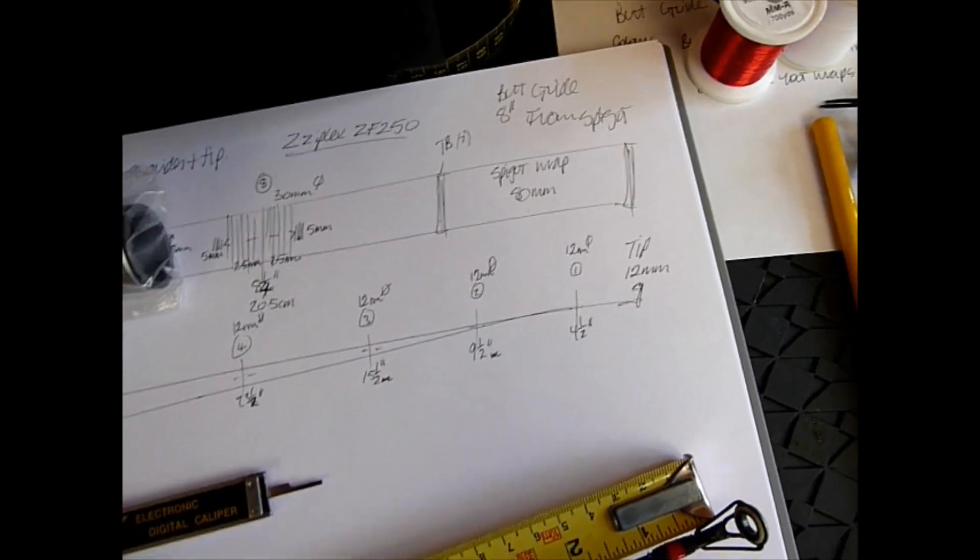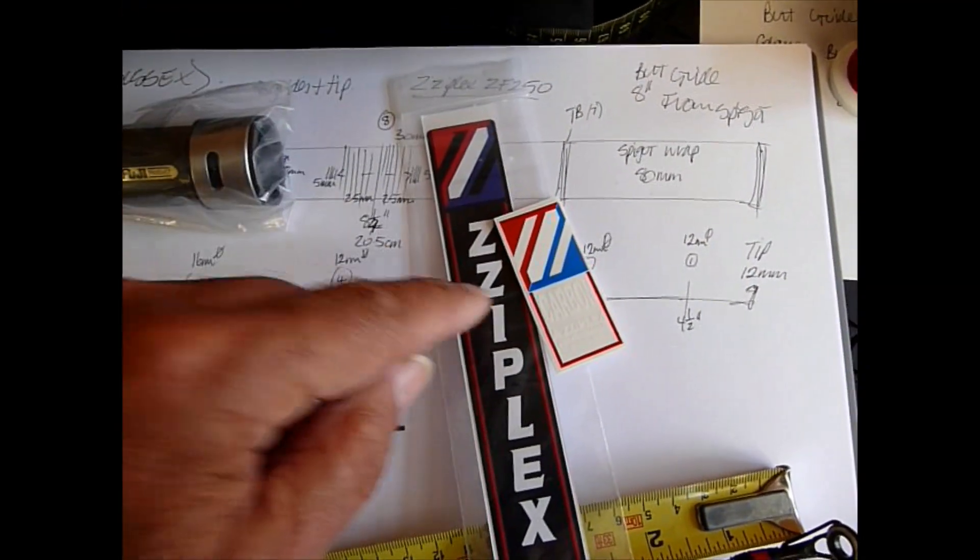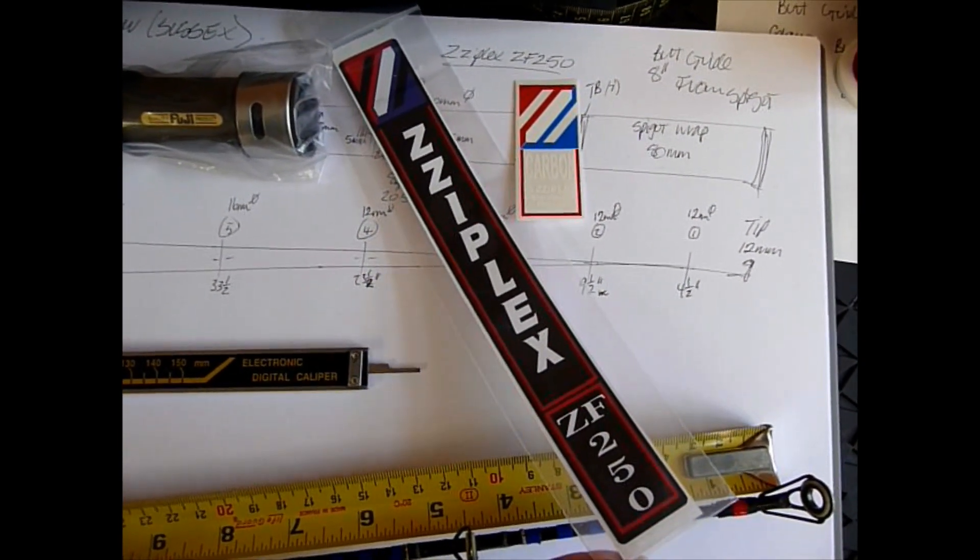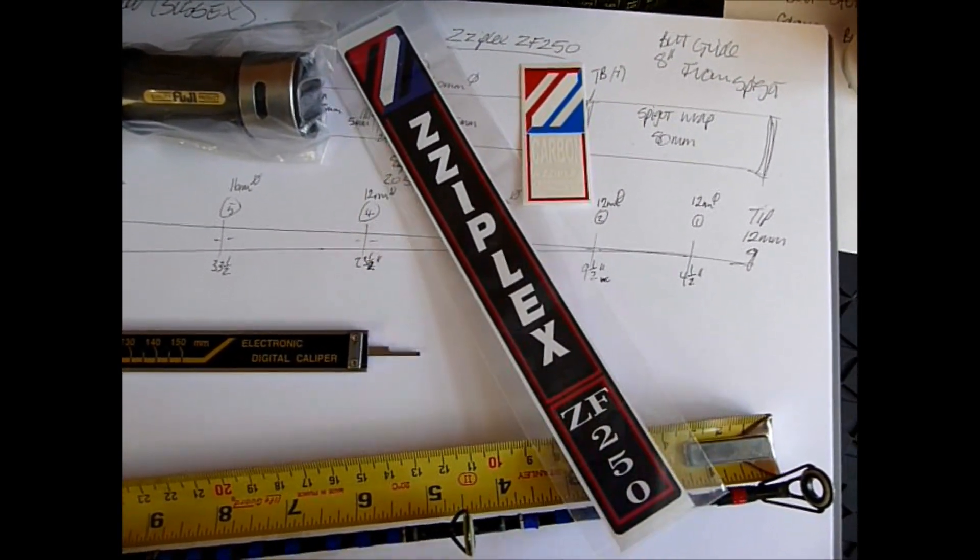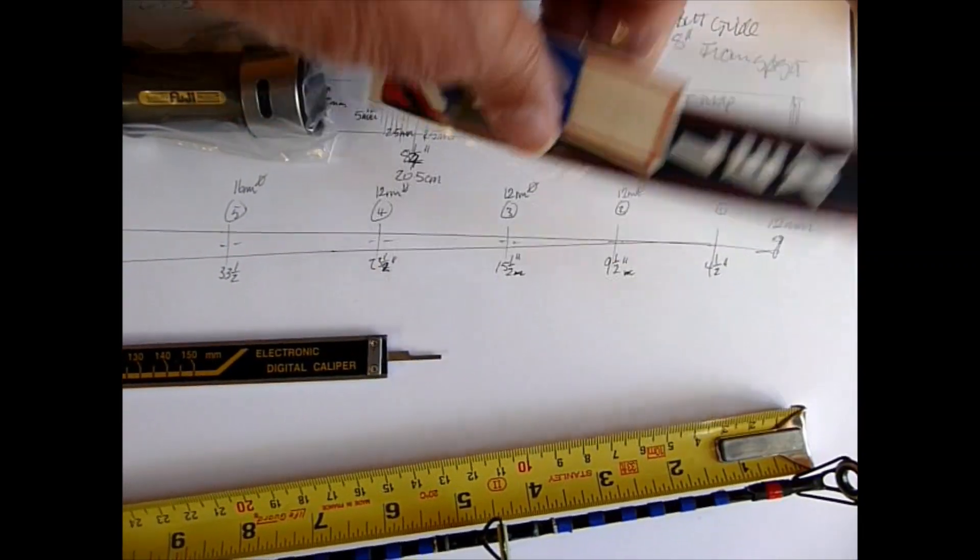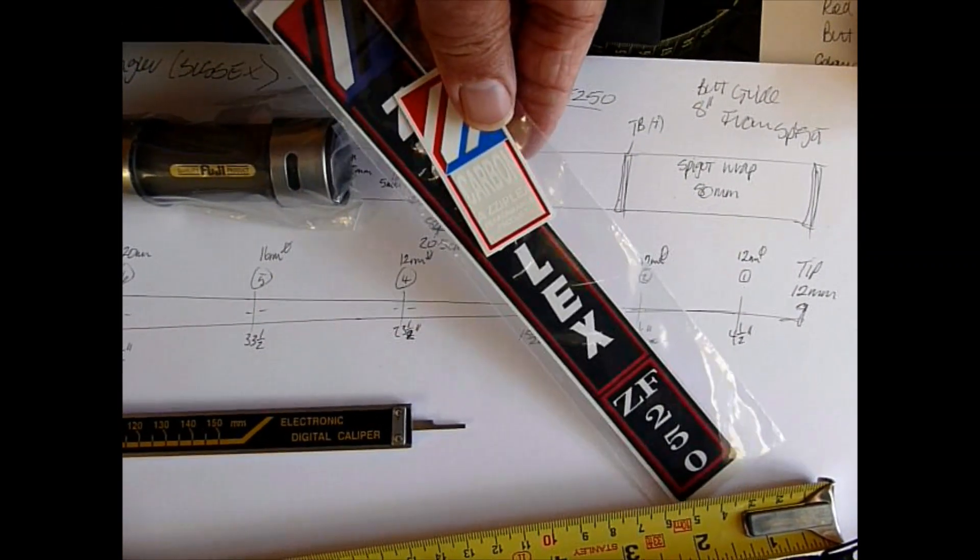The most important thing out of all these components is the Ziplex decal. This is what's going to take you the time to get hold of, so do not strip the rod down until you've got this on the bench.